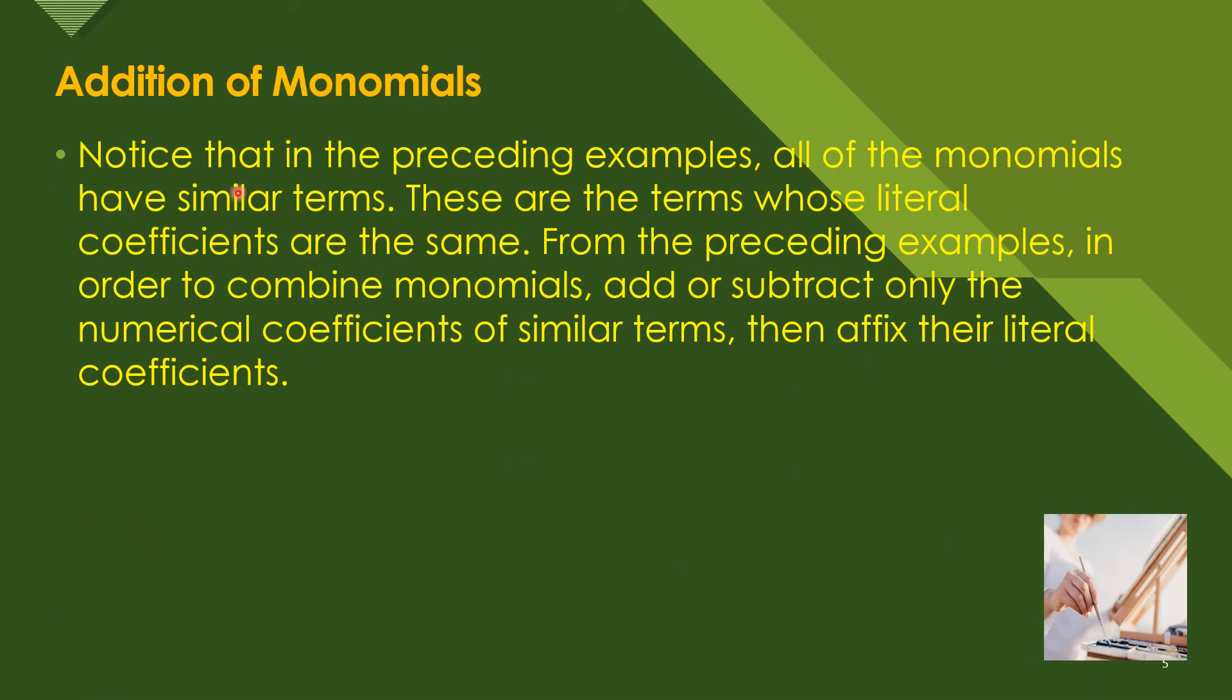Next we have 7x minus 19x. Here 7 minus 19, we have -12. Subtract and copy the sign of the larger number which is negative, so that's why we get -12x. Notice that in the preceding examples all of the monomials have similar terms - these are the terms whose literal coefficients are the same. From the preceding examples, in order to combine monomials, add or subtract only the numerical coefficients. What we did is we just add or subtract the numerical coefficients of the similar terms, then copy the literal coefficient.